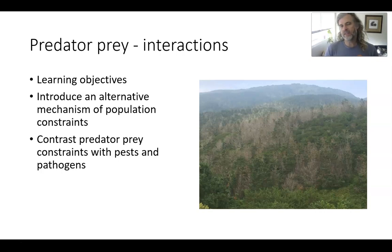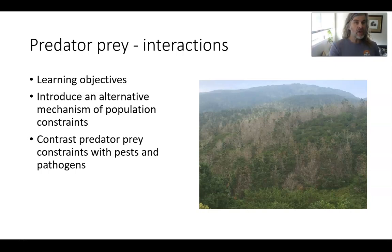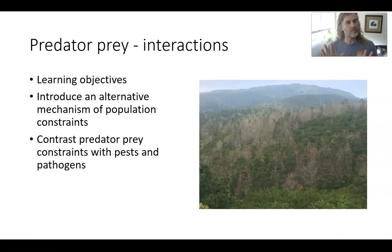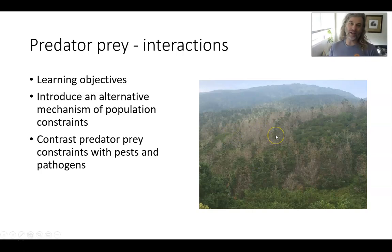Predator-prey interactions are an alternative mechanism for constraining populations. You can constrain populations without having a carrying capacity. We're going to contrast these, particularly with pests and pathogens, because you may be inclined to think about pests and pathogens of trees like predators. This is an example of a disease — pitch pine canker in bishop pine in Point Reyes.